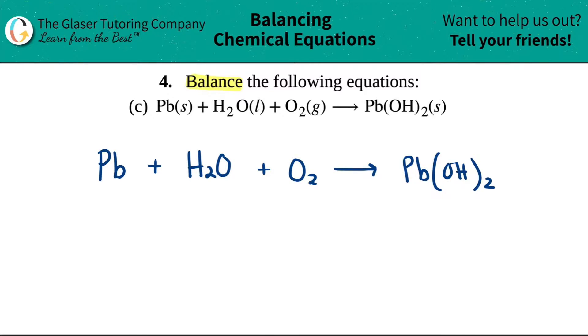When we're balancing equations, remember we like to write that chart. It's a two-tiered chart. Reactants on the left side and products on the right side. The reactants are everything on the left side of that yield sign, the arrow, and the products are everything on the right side of that yield sign.